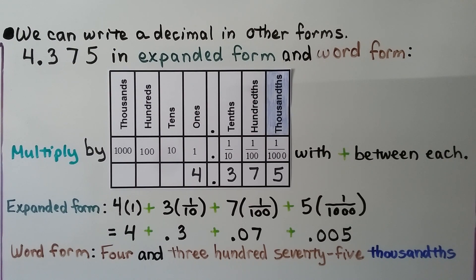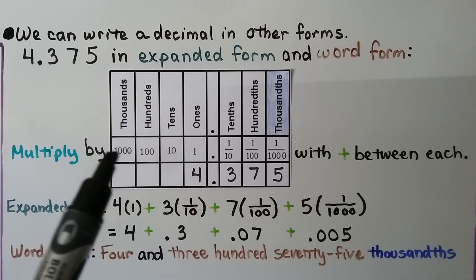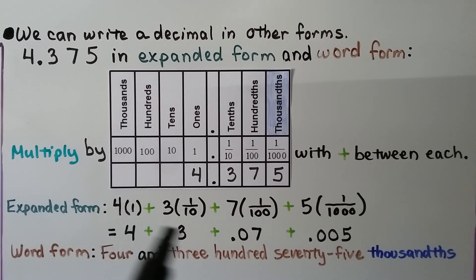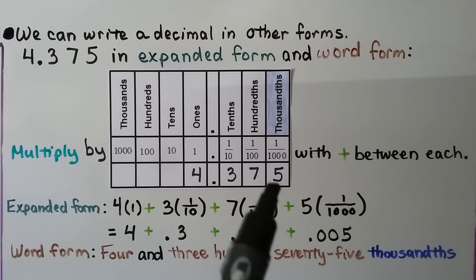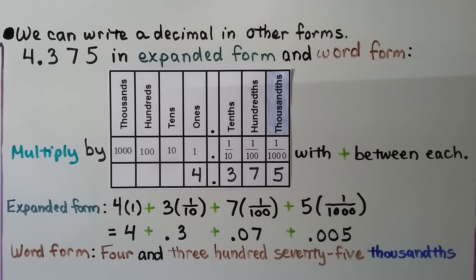We can write a decimal in other forms. Let's write four and three hundred seventy-five thousandths in expanded form and word form. Using a place value chart, the four is multiplied by one, the three by one-tenth, the seven by one-hundredth, and the five by one-thousandth. That gives us four plus three-tenths plus seven-hundredths plus five-thousandths. In word form: four AND three hundred seventy-five thousandths.